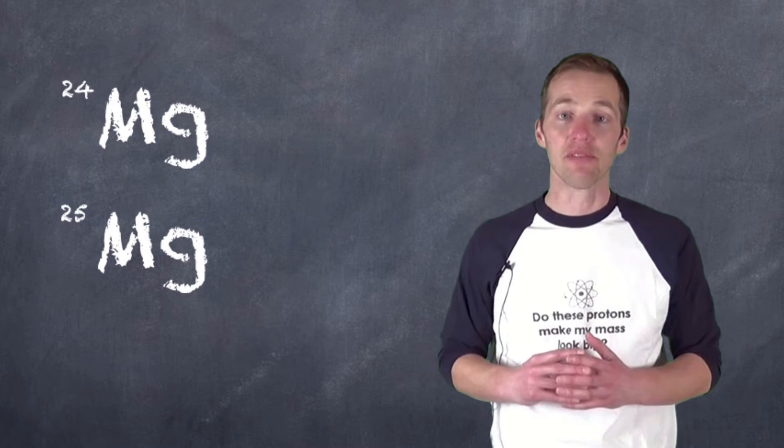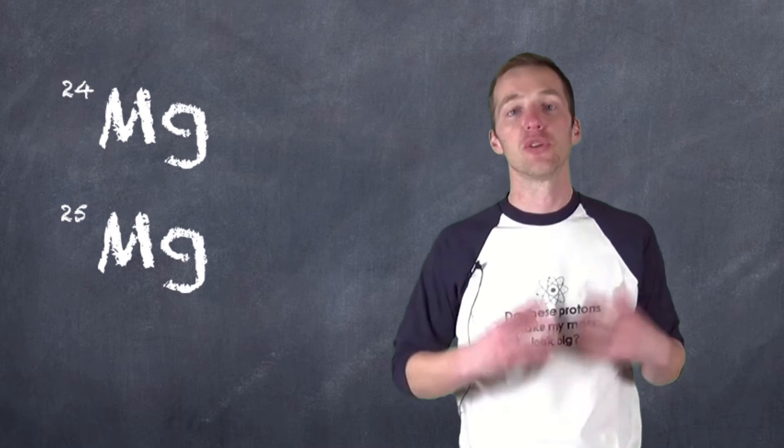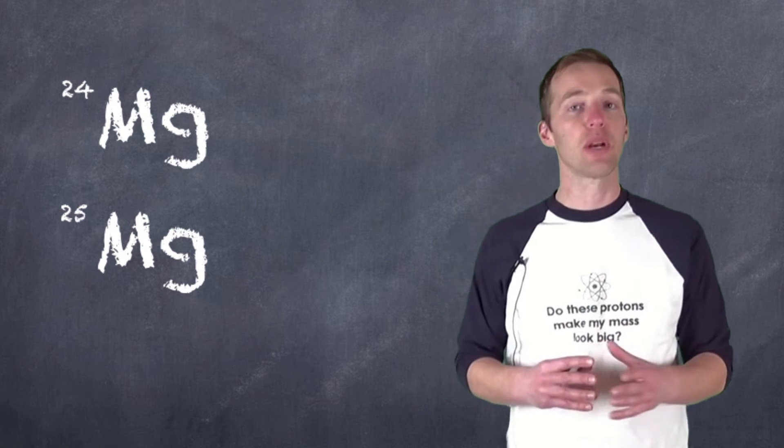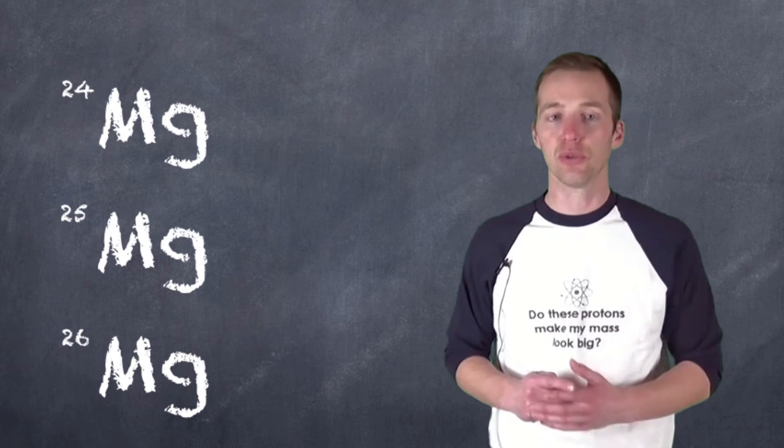There's also magnesium-25. Now, remember, the atomic number, the number of protons, can't change, so we know that in magnesium-25 we're now dealing with 13 neutrons, and we can also have a version of magnesium that has 14 neutrons.